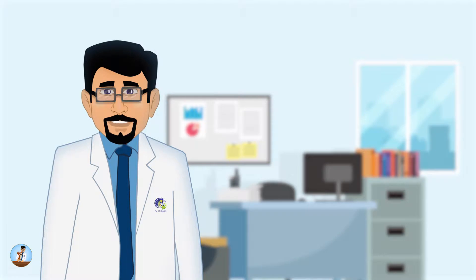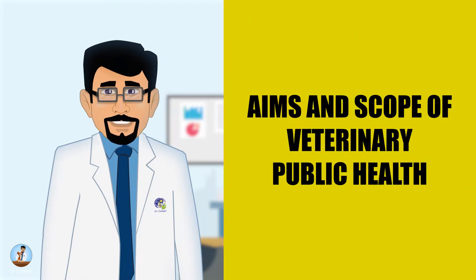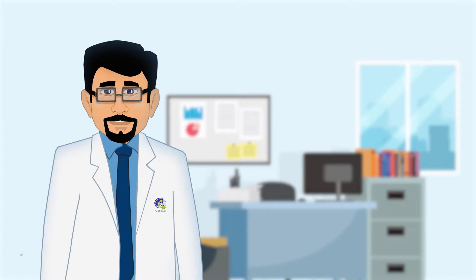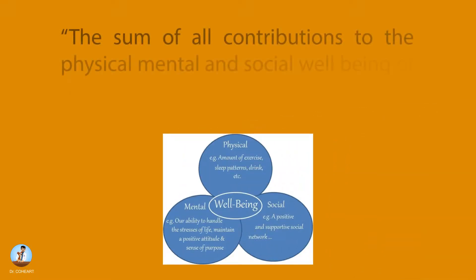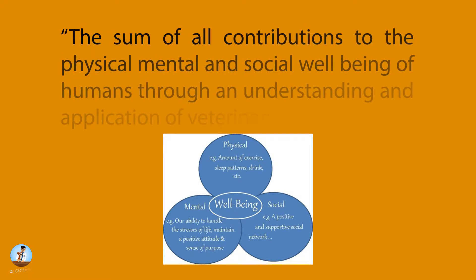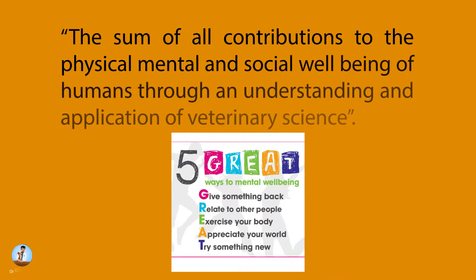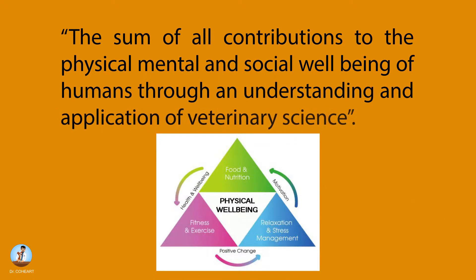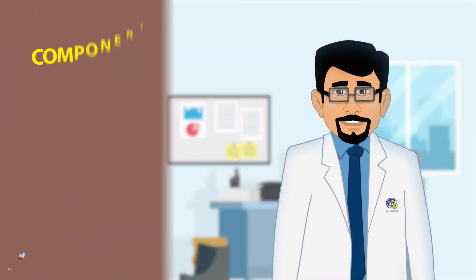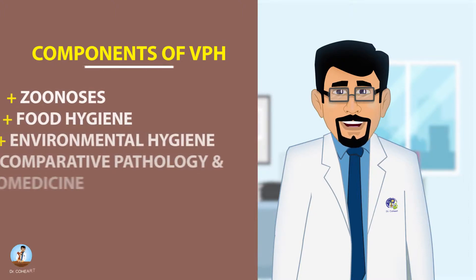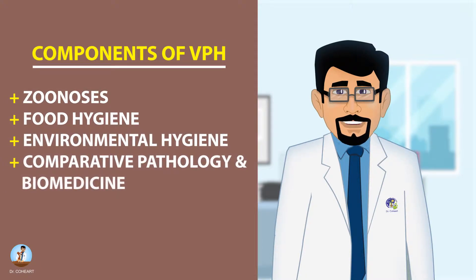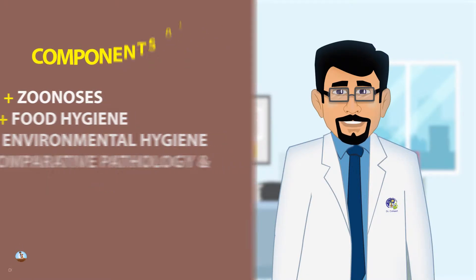Dear friends, today we'll discuss the aims and scope of veterinary public health. Veterinary public health, or VPH, is defined as the sum of all contributions to the physical, mental, and social well-being of humans through an understanding and application of veterinary sciences. Zoonosis, food hygiene, environmental hygiene, and comparative pathology and biomedicine form the key components of VPH.